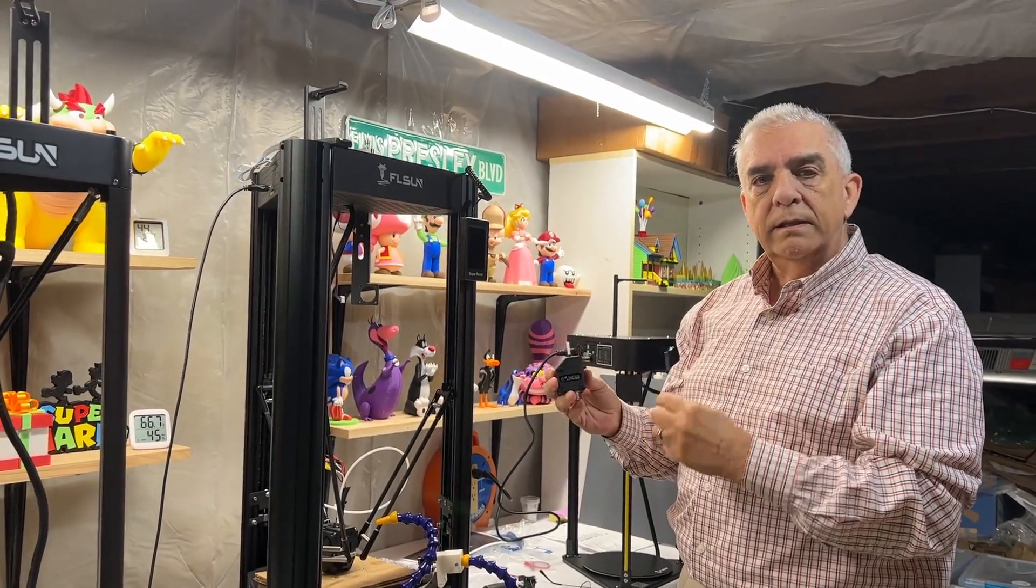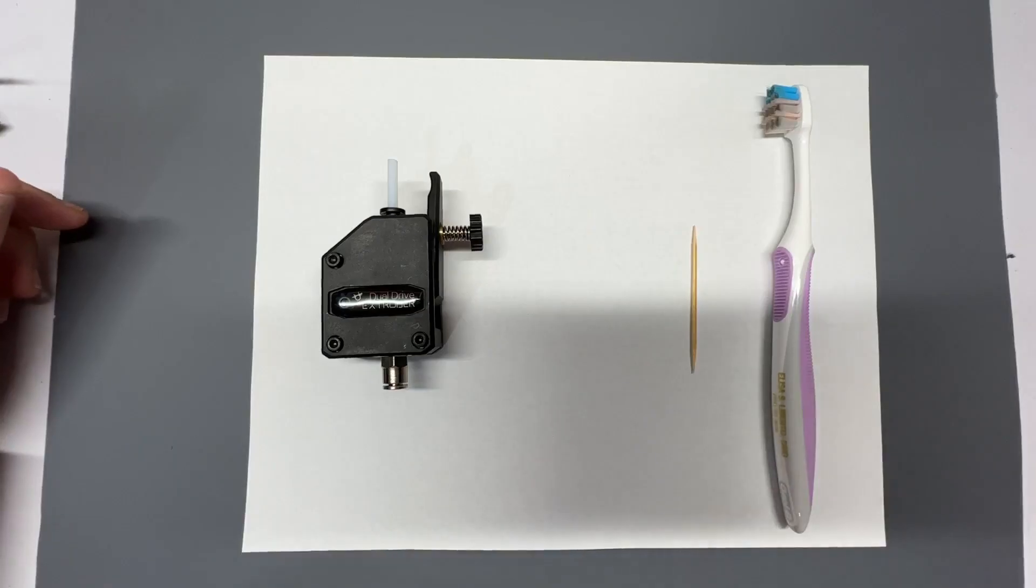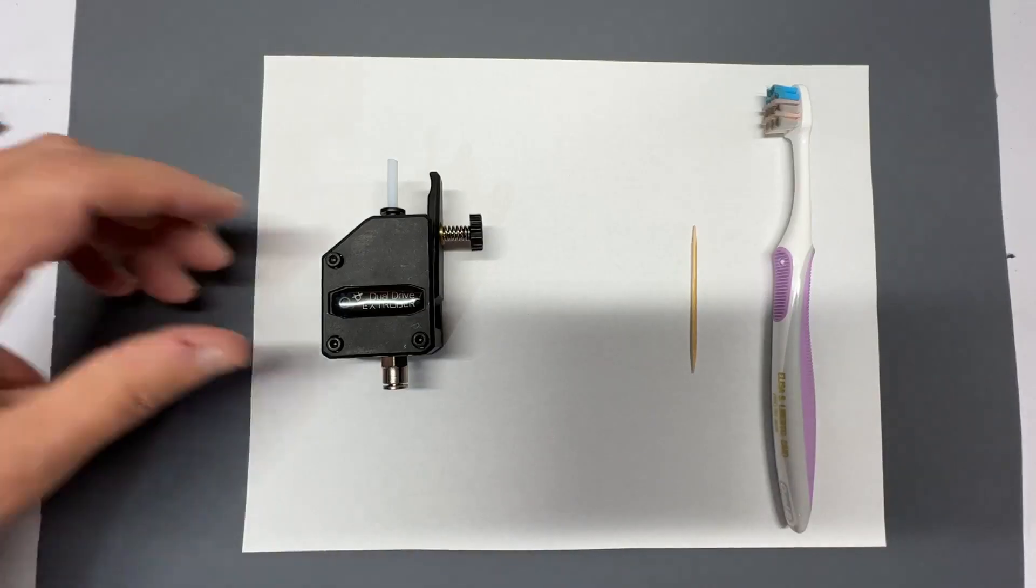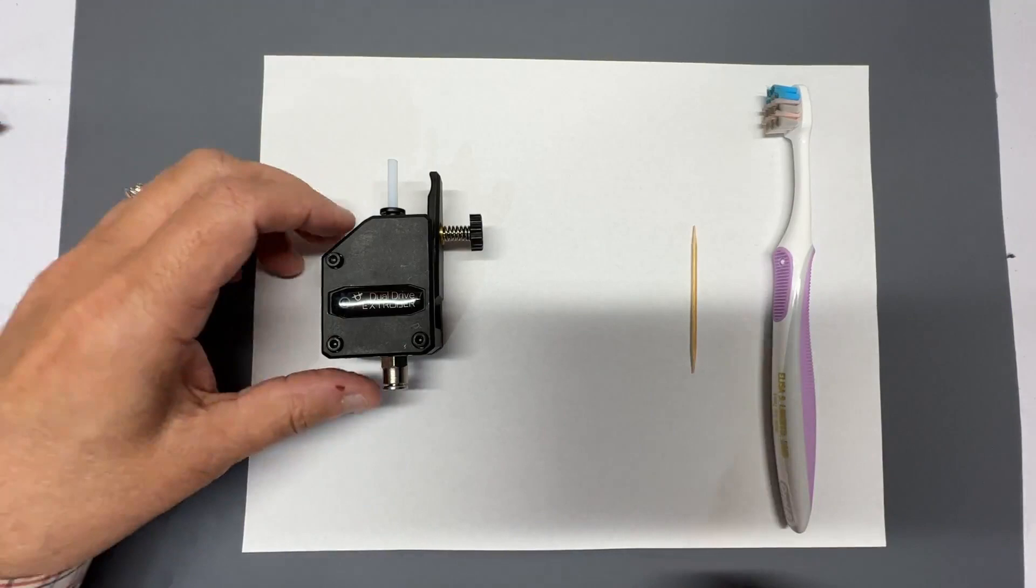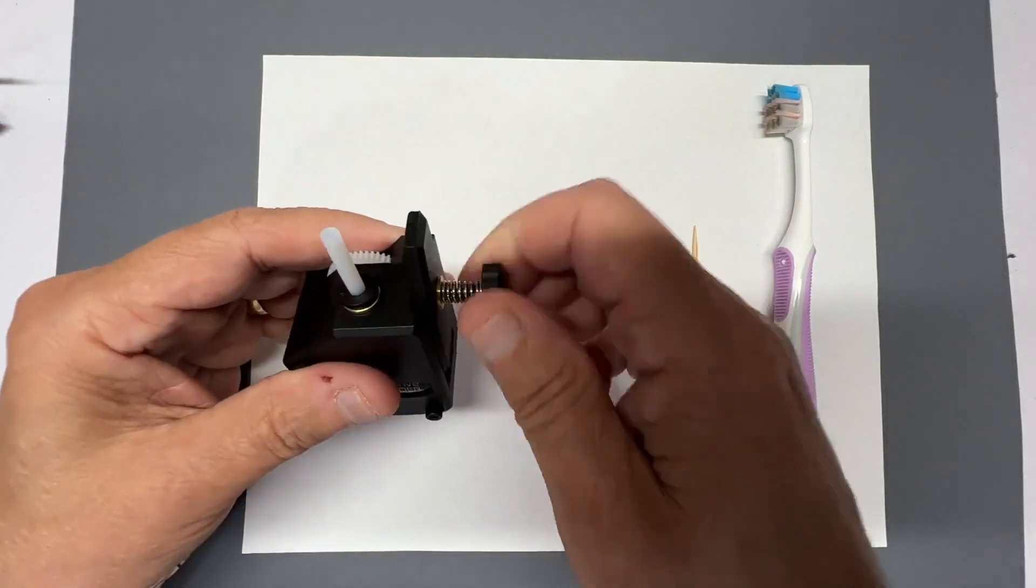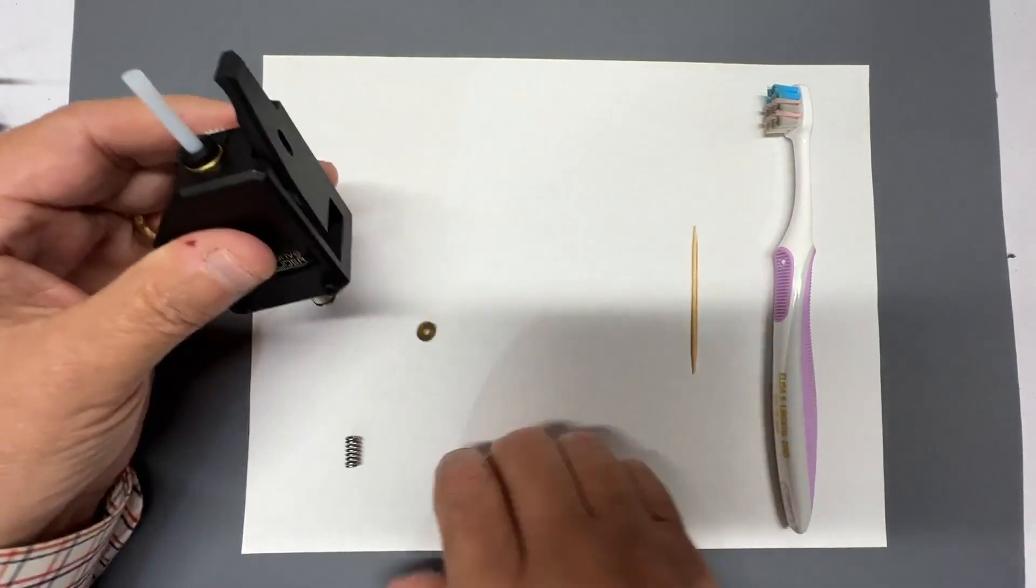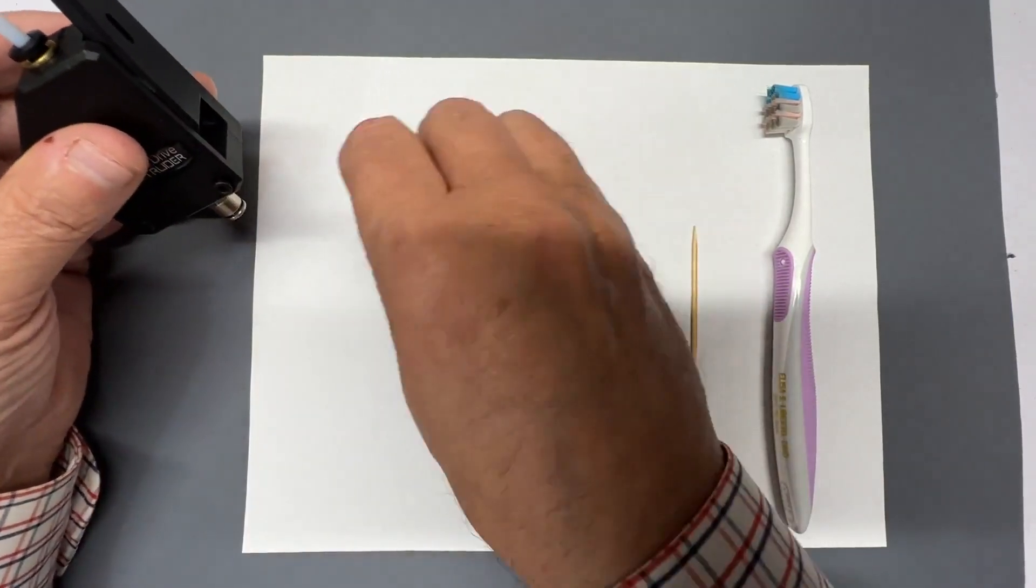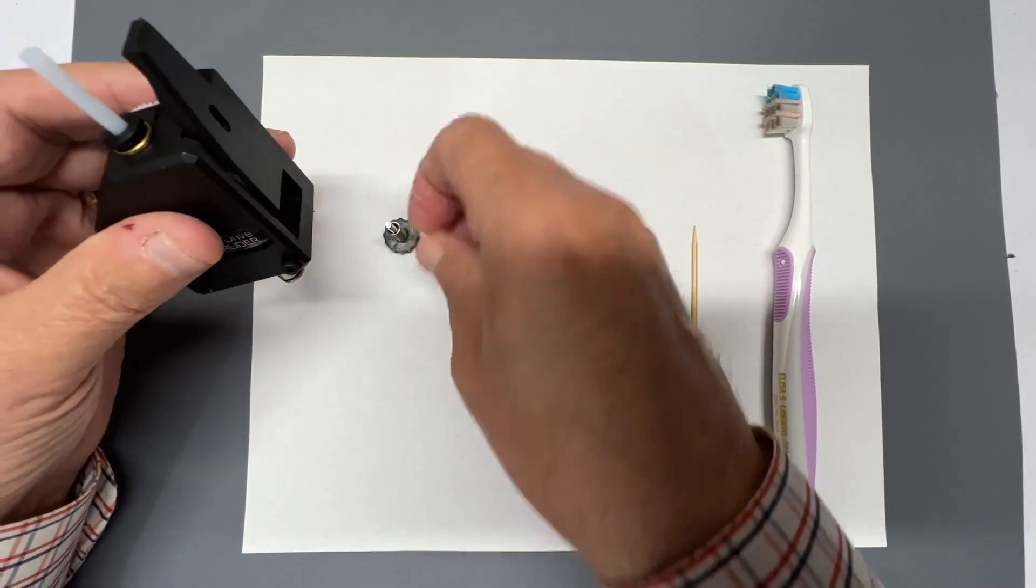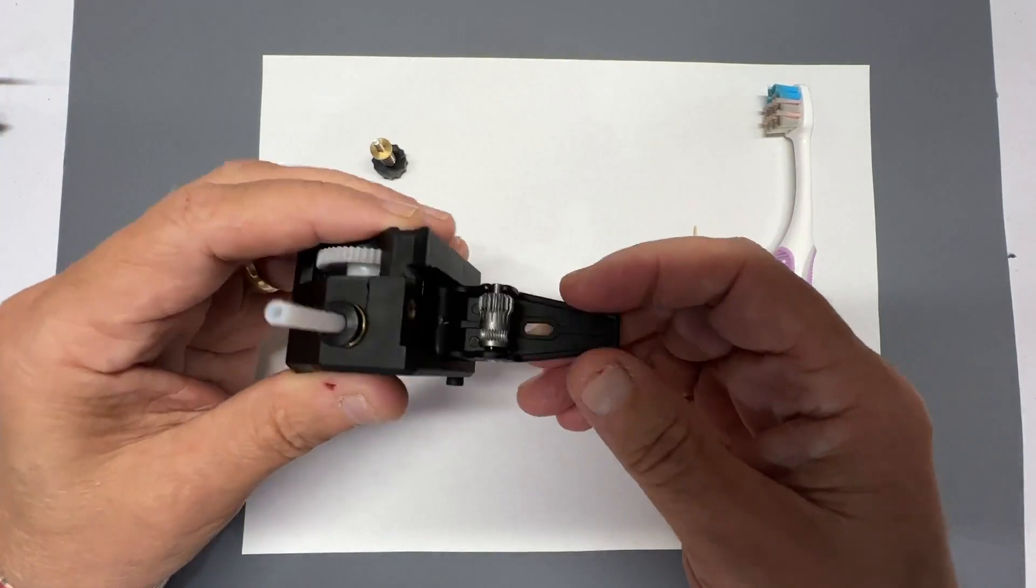What I'll do next is disassemble this and show you how to clean it properly. Alright, so now we're going to disassemble the extruder. Don't be afraid, there's nothing in here that we can't put back together. So just take off the thumb screw. That'll bring out the lever.